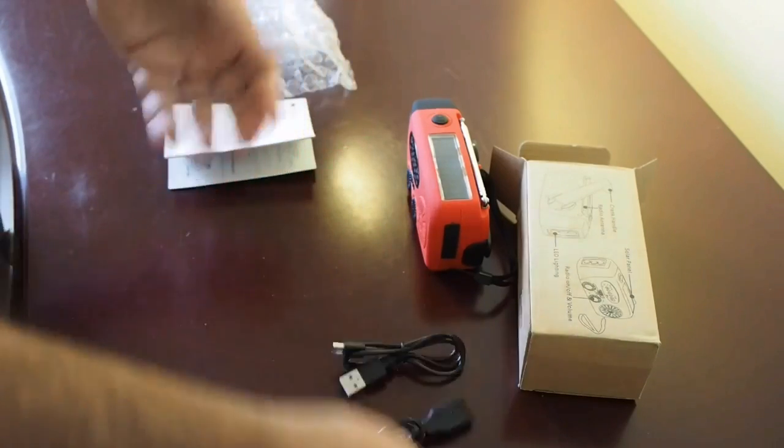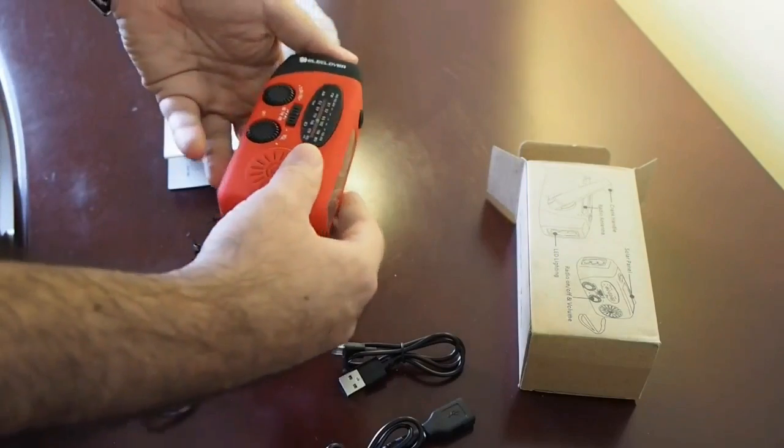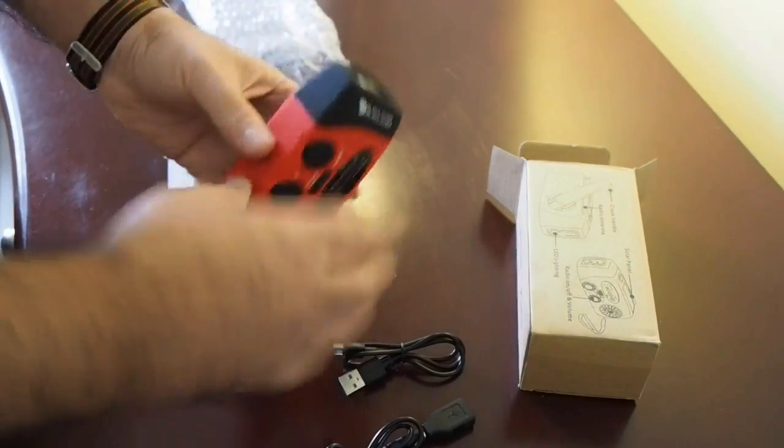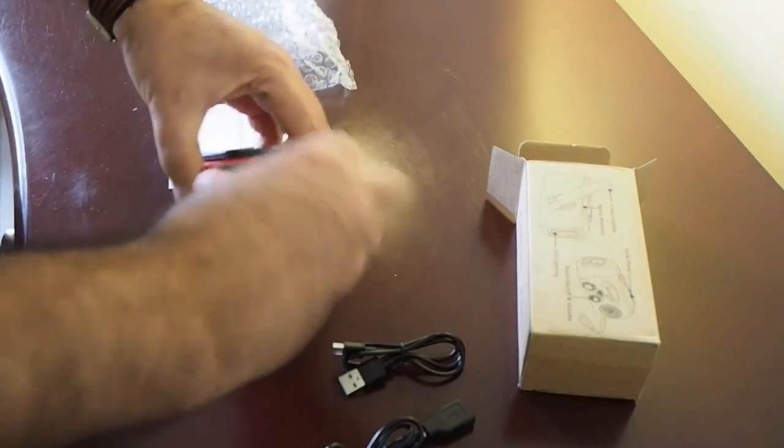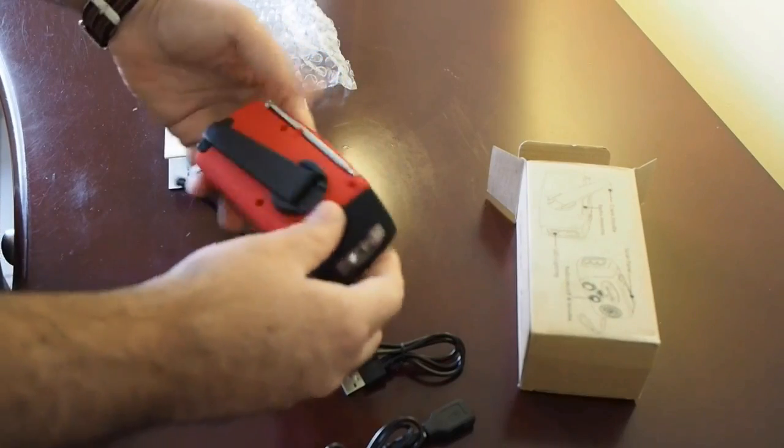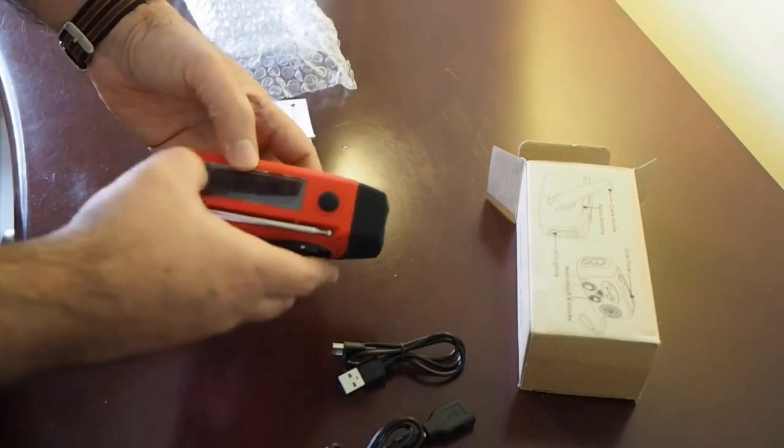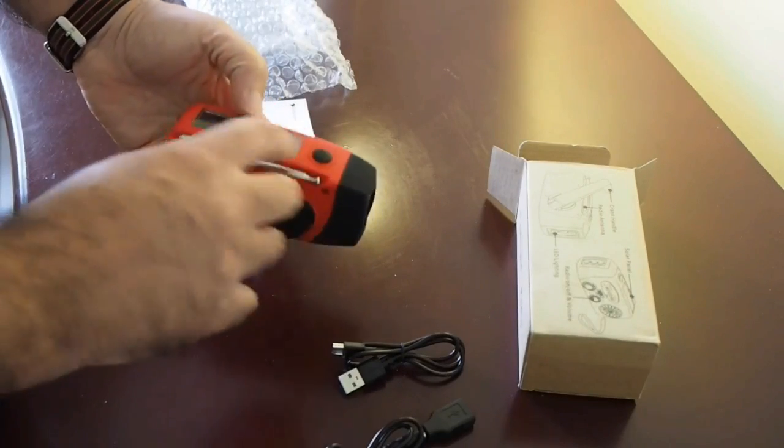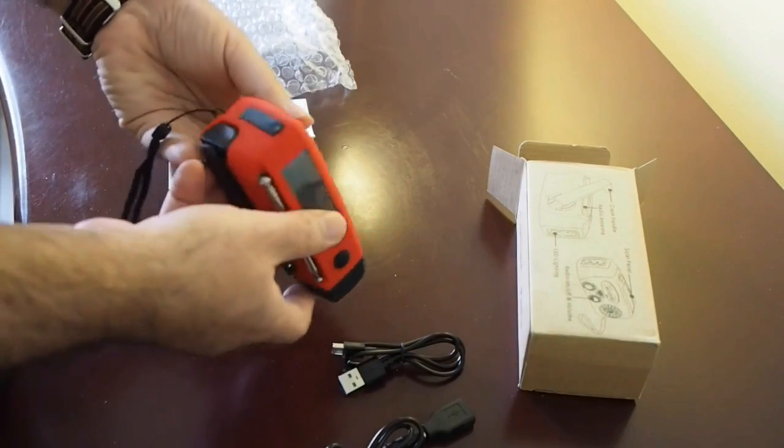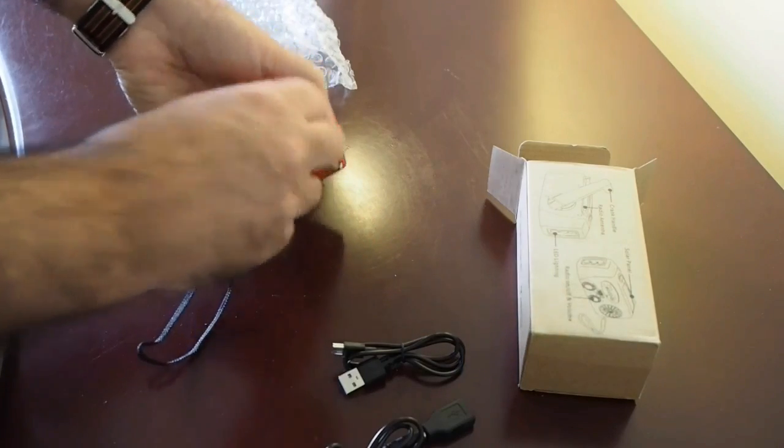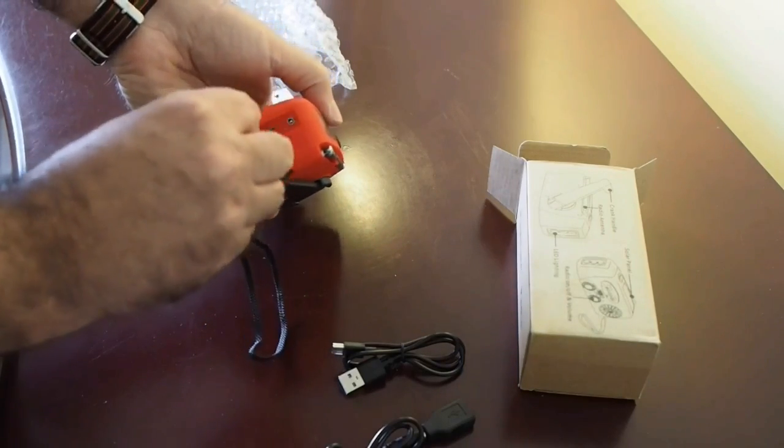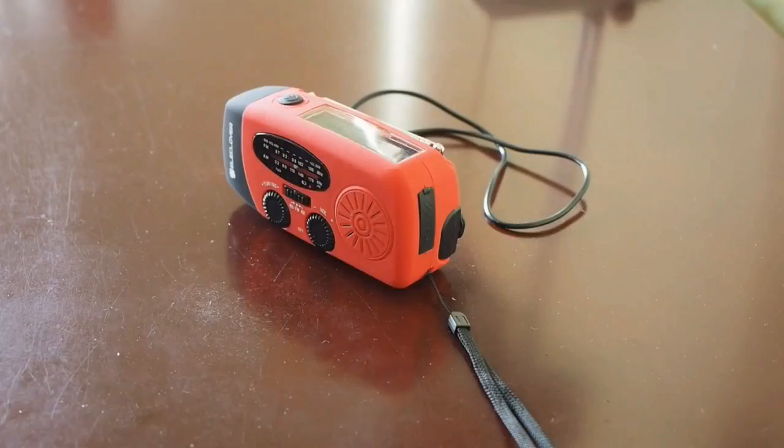Now to look at the manual. Let's see how this works. This is rubberized, which is nice. It has a handle and crank, and these are the solar panels here. We have an opening here.